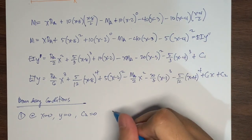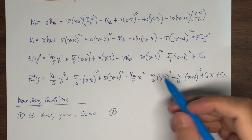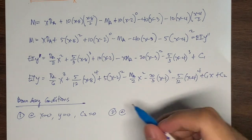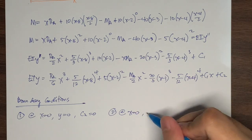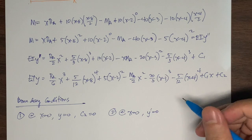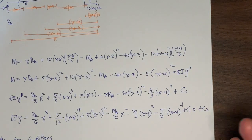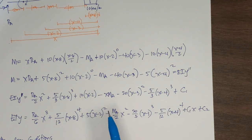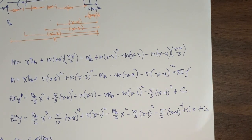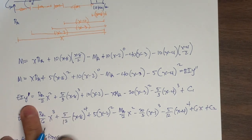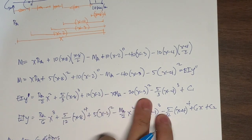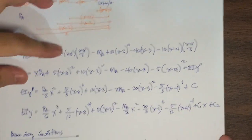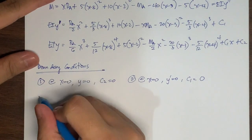By analytic geometry, C2 is the intercept — the initial value — and since we have a fixed support at the starting point, C2 must be zero. For the second boundary condition, substituting x equals 0 into the slope equation, all terms are neglected, giving C1 equals zero. By inspection, C1 is the slope intercept at the initial value, which is zero for a fixed support.